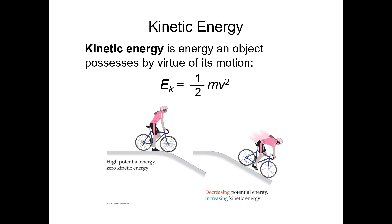There are two types of energy. Kinetic energy is energy associated with motion, and the formula for kinetic energy is one-half mv squared — as we talked about when discussing gases. Here's an illustration: when a woman on a bicycle sits at the top of a hill, she has no kinetic energy but maximum potential energy. As she goes down the hill, her potential energy decreases as her kinetic energy increases.